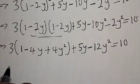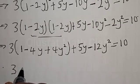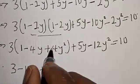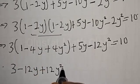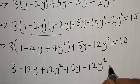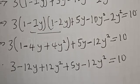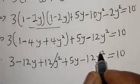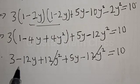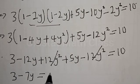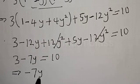Opening this bracket: 3 times 1 is 3, minus 3 times 4y is 12y, plus 3 times 4y squared is 12y squared, plus 5y, minus 12y squared, equal to 10. Here we have minus 12y squared and plus 12y squared — these cancel each other out.